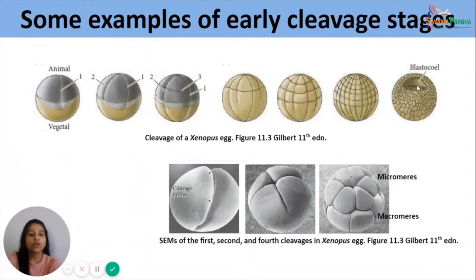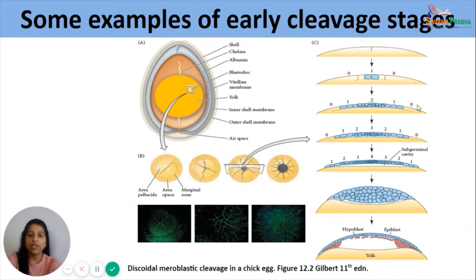This shows early cleavage stages in a chick egg. The divisions are meroblastic discoidal in nature, occurring in the small disc of cytoplasm at the animal pole. Subsequent cleavages also form the blastula at this disc. The chick egg will be discussed in further detail in the next lectures.